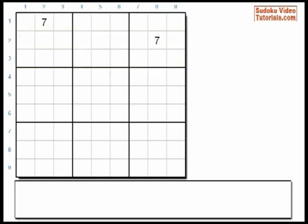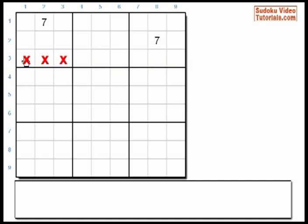Row 1 and Row 2 already have a 7. So we can conclude that Row 3 also must have a 7, because all rows must contain all numbers from 1 to 9. So the 7 must be in Row 3. But where in Row 3? Well, it can't go in these 3 cells because they belong to Box 1 and there's already a 7 in Box 1. And it also can't go in these 3 cells which are part of Box 3, because there's already a 7 in Box 3.